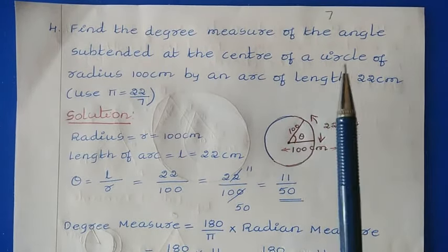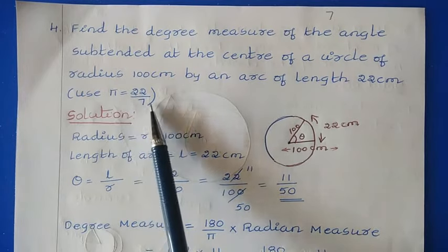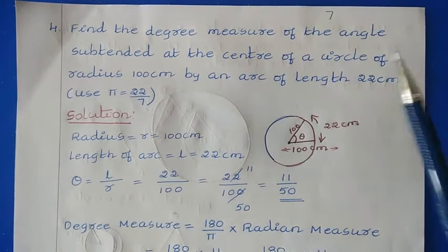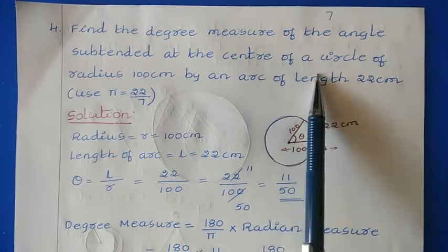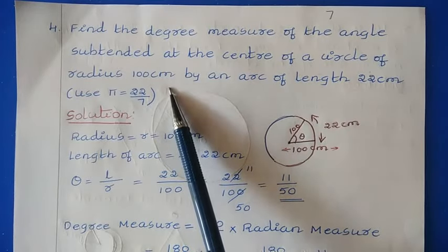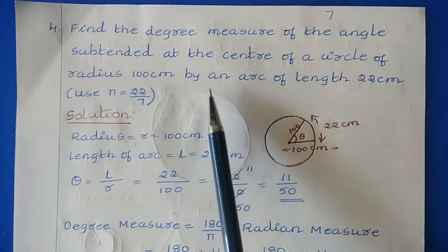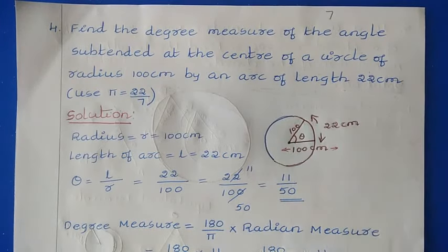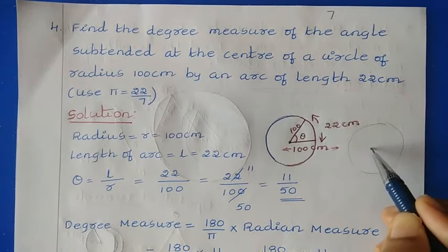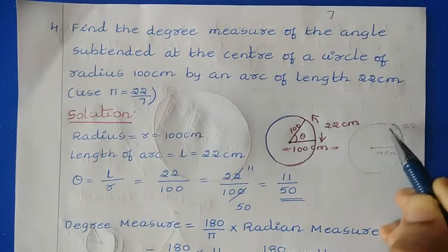In this question, we need to find the degree measure. So when you find the π value in the formula, replace it with 22/7. The given values are: radius r = 100 cm, and the length of the arc is 22 cm.